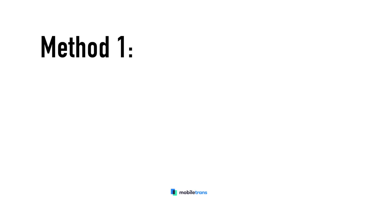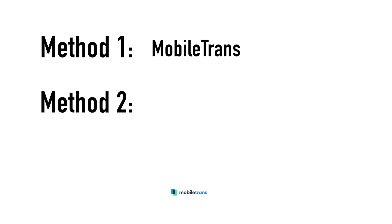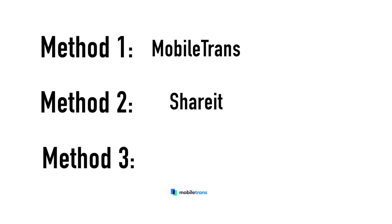In this video, we will go through three different ways to transfer your data from an Android phone to an iPhone. Method one would be to do that transfer using Mobile Trends. The second method will be moving your data from an Android to an iPhone using an app called ShareIt. And then the third and final method will be to transfer your data from an Android to an iPhone using SendAnywhere.